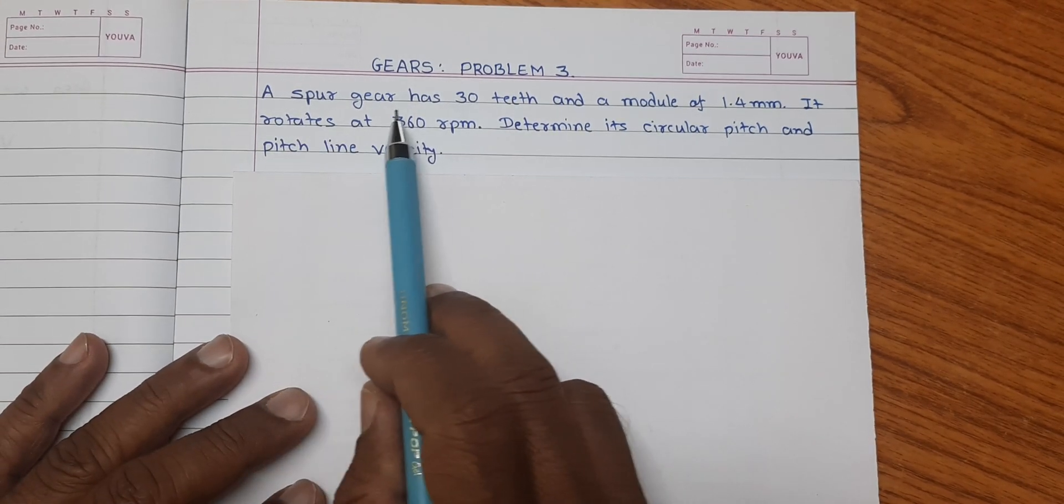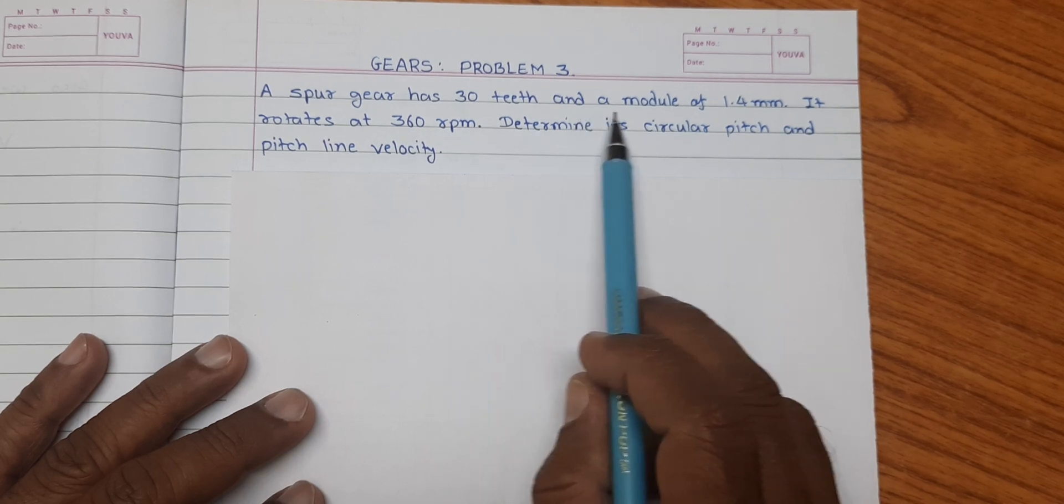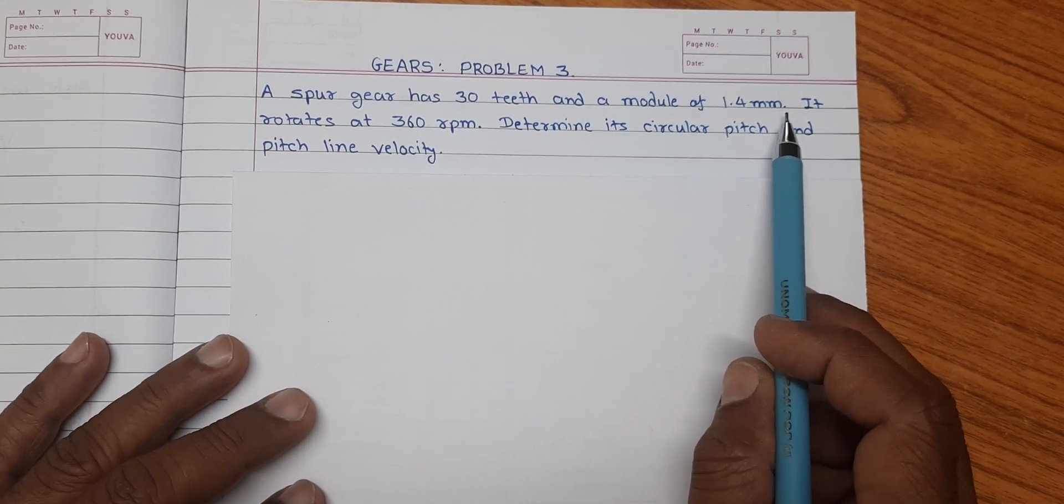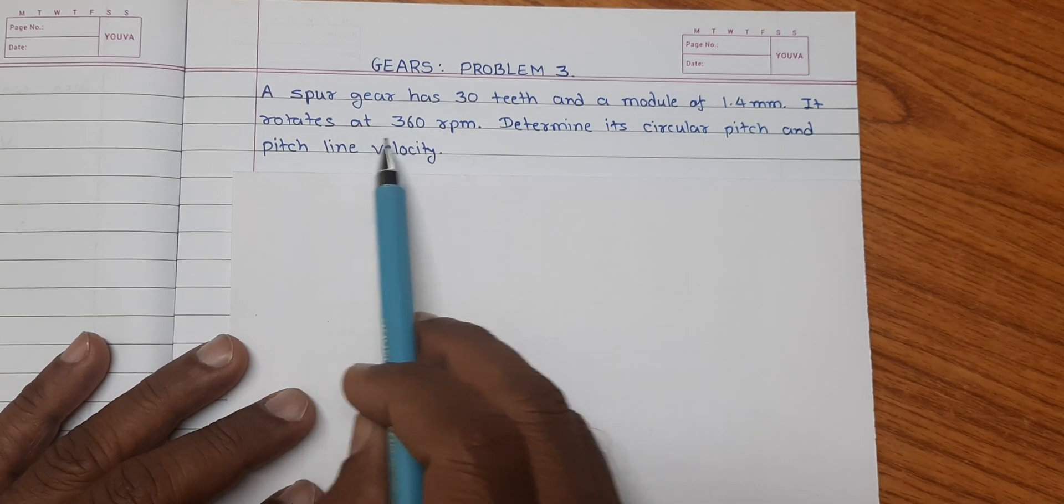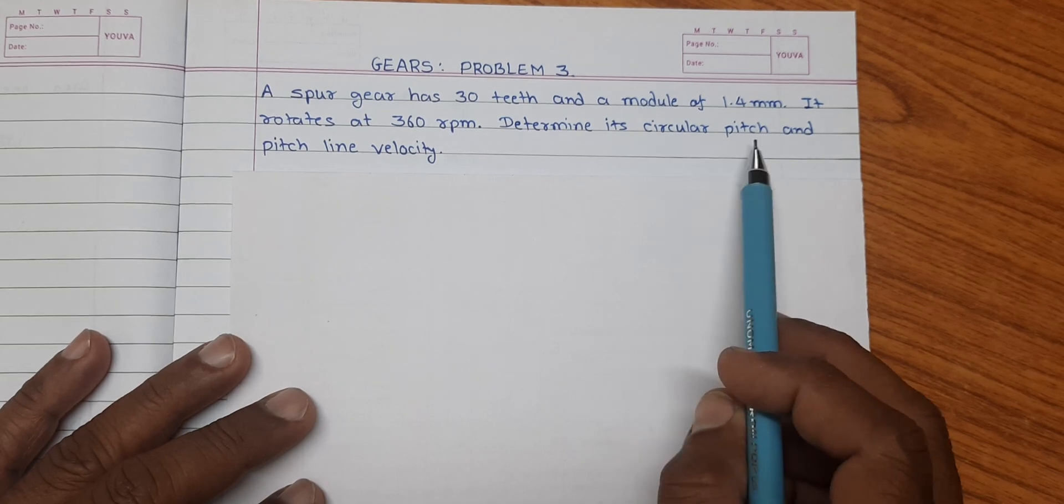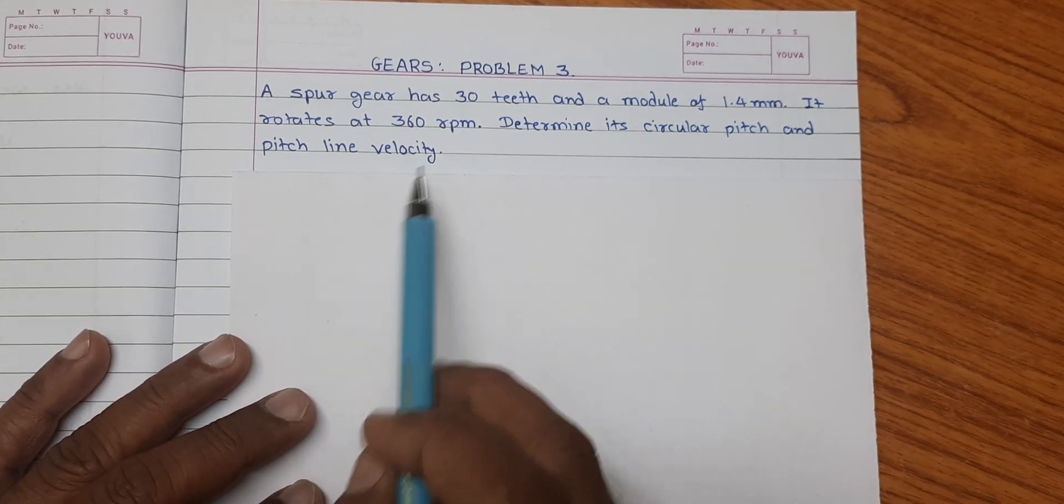A spur gear has 30 teeth and a module of 1.4 mm. It rotates at 360 rpm. Determine its circular pitch and pitch line velocity.